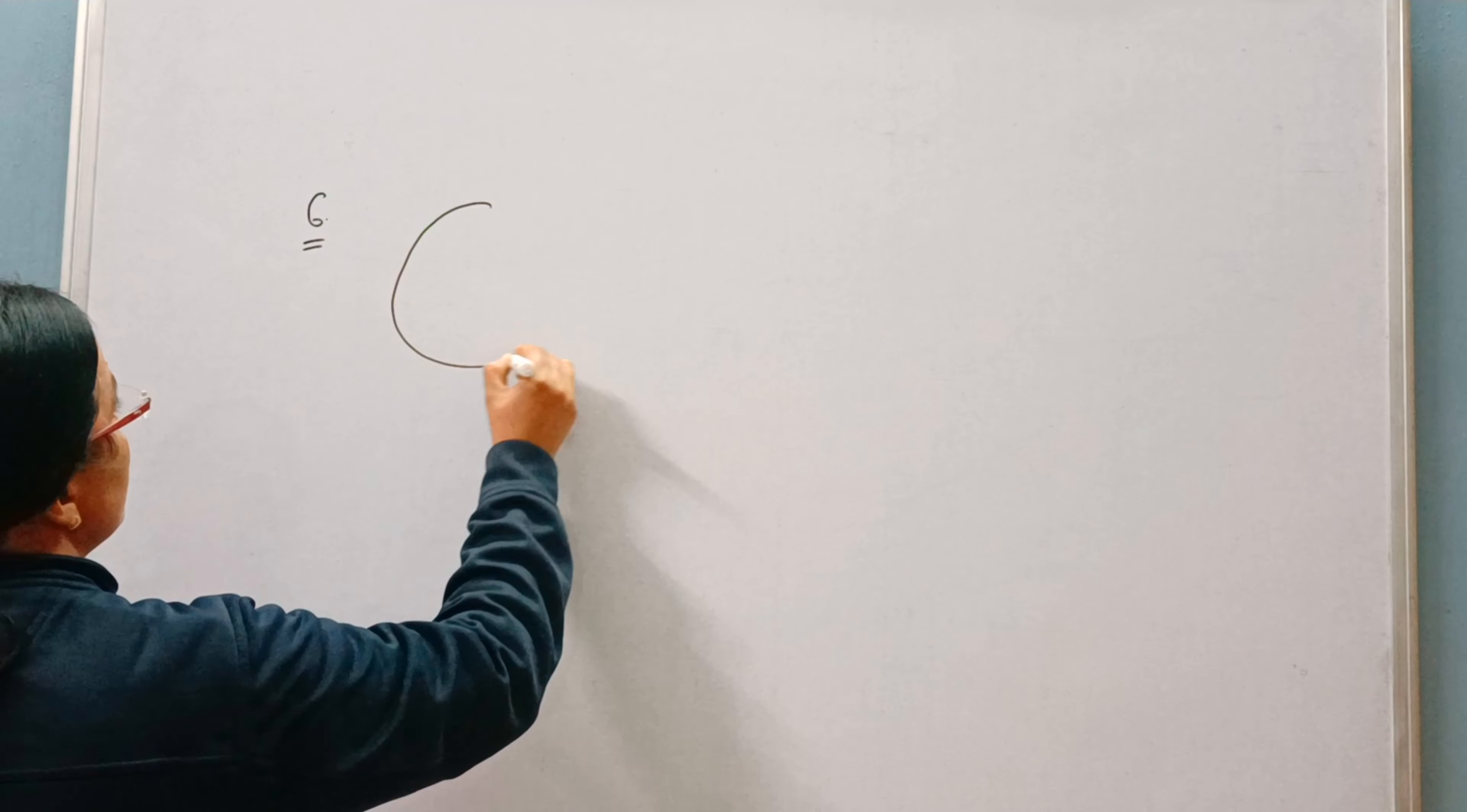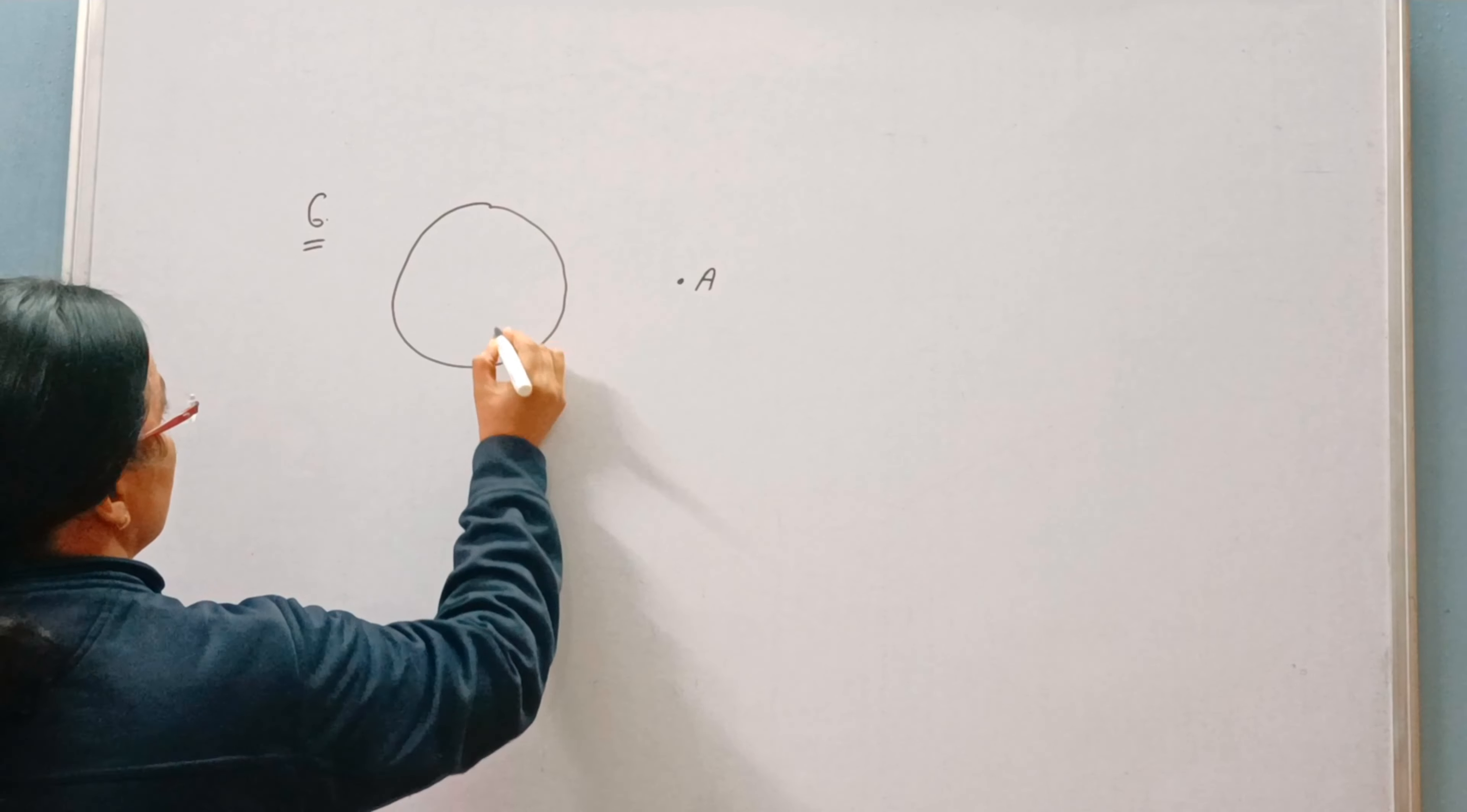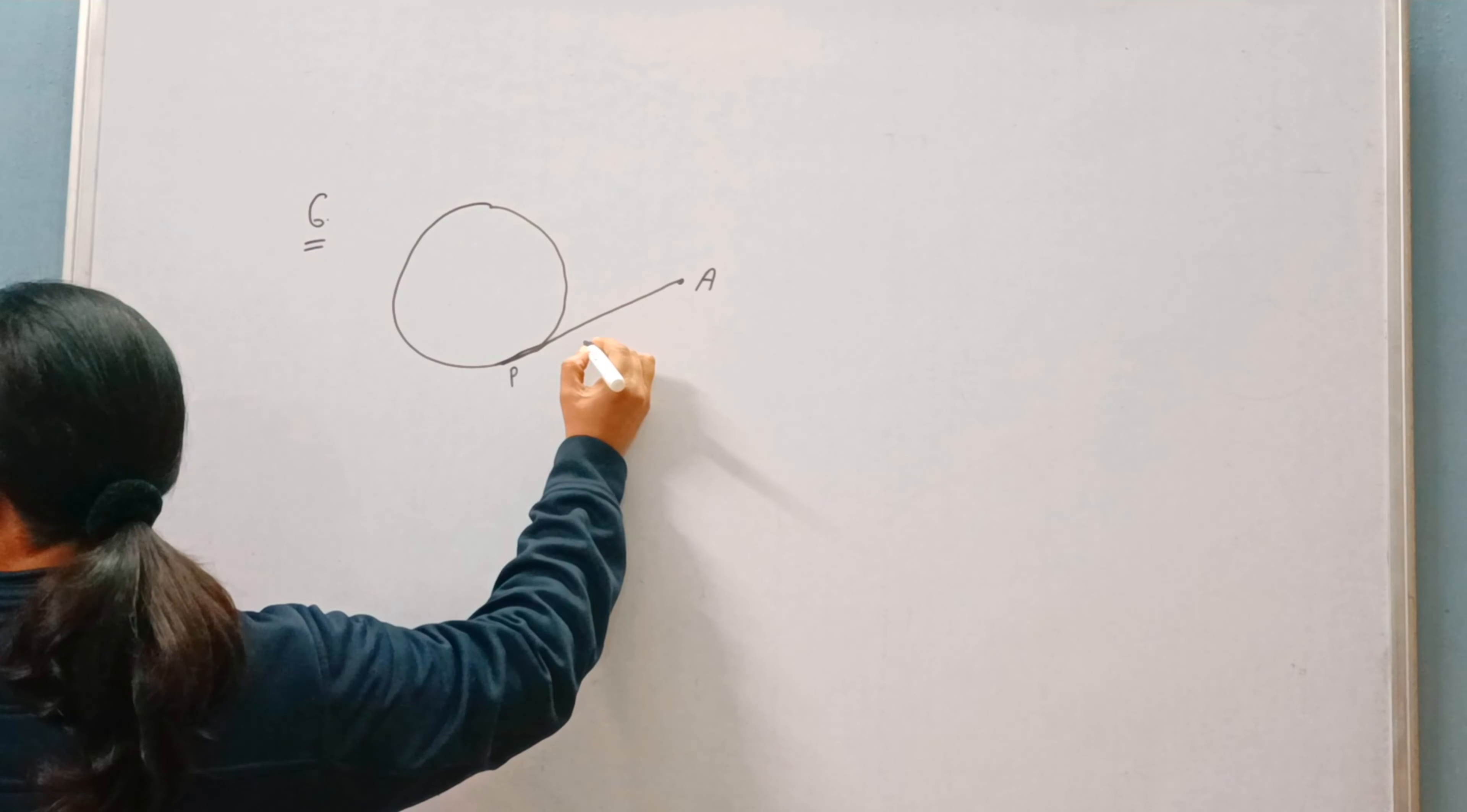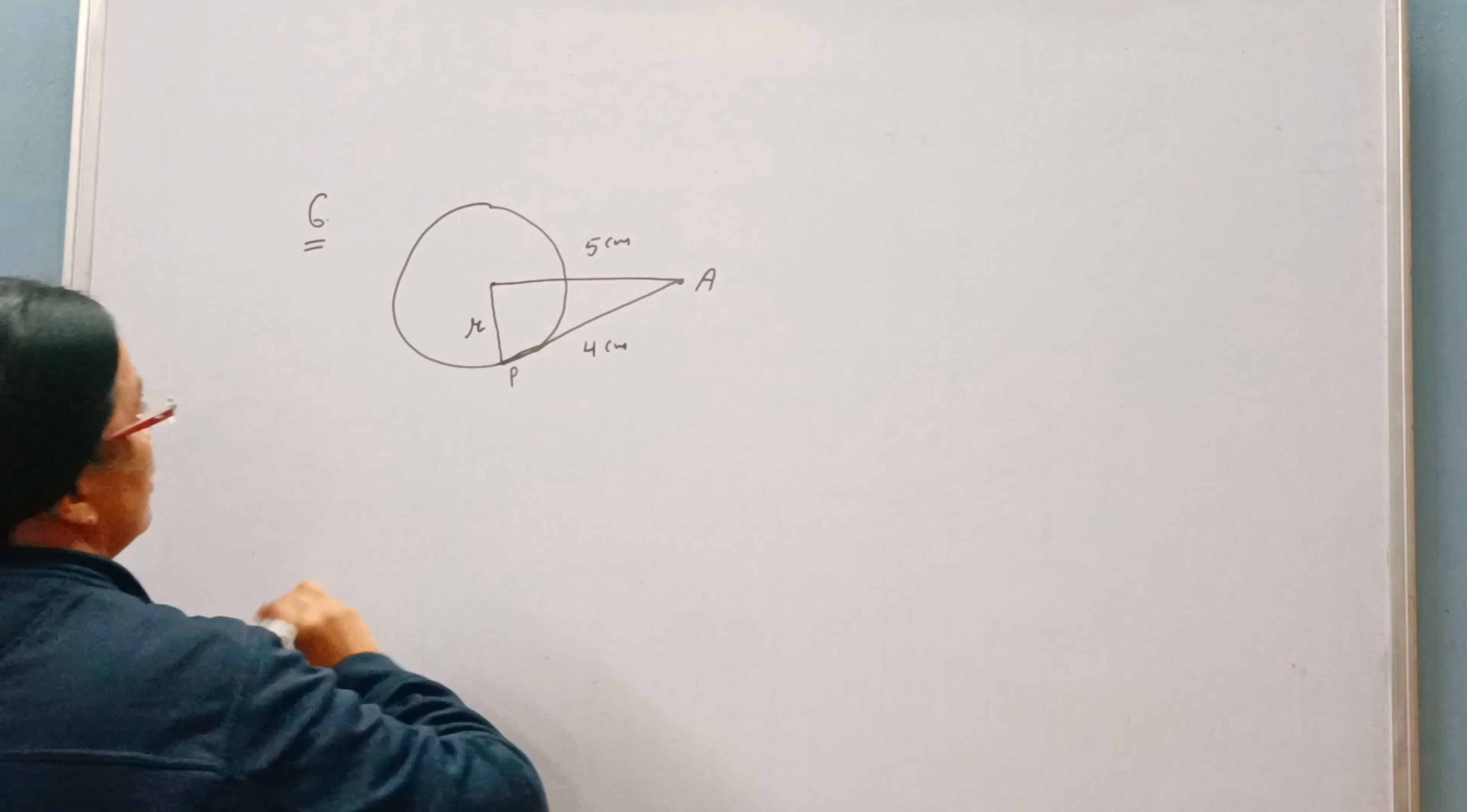Now see, the length of a tangent from point A, this is point A and this is the tangent. PT is the tangent and the length of the tangent is 4 cm and this point A is at a distance of 5 cm from the center. We need to find the radius of the circle.